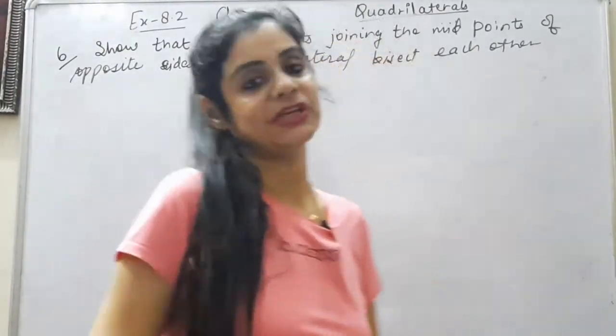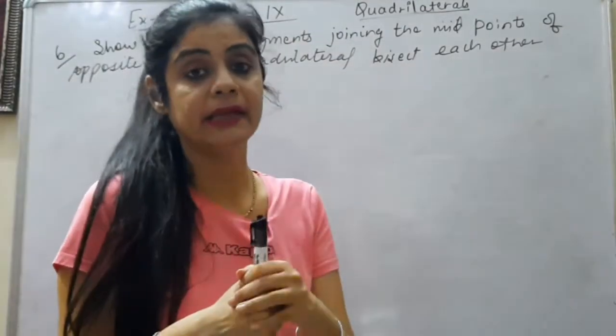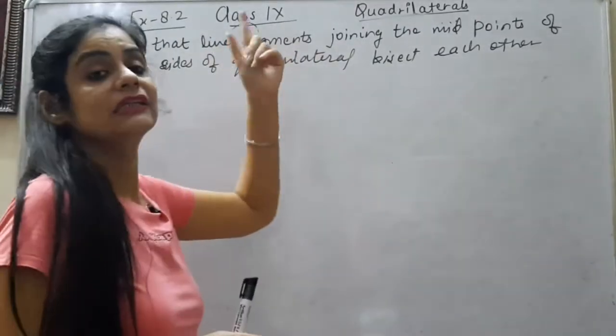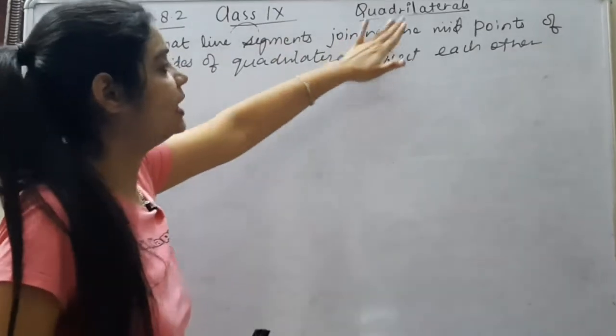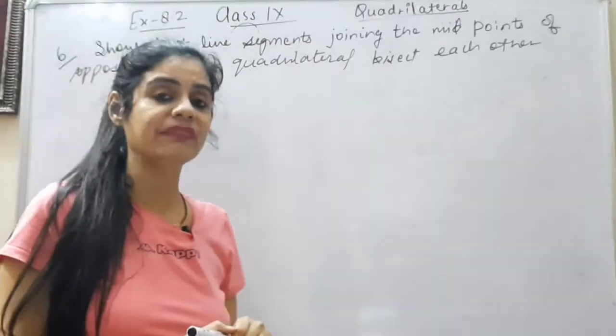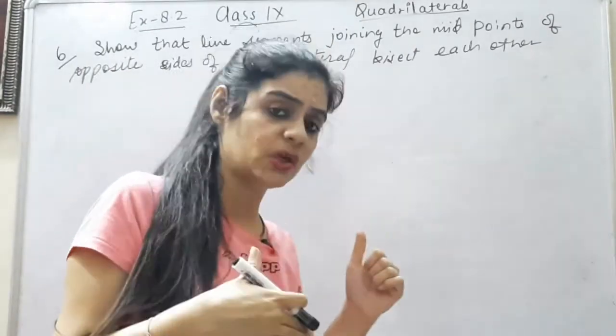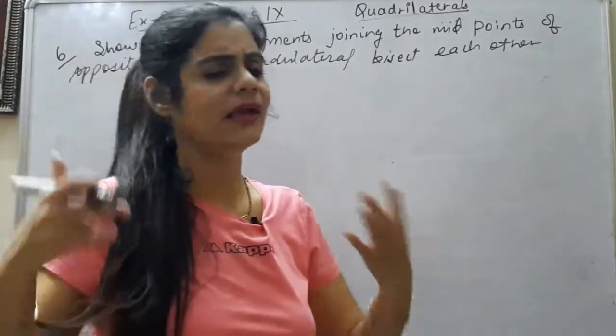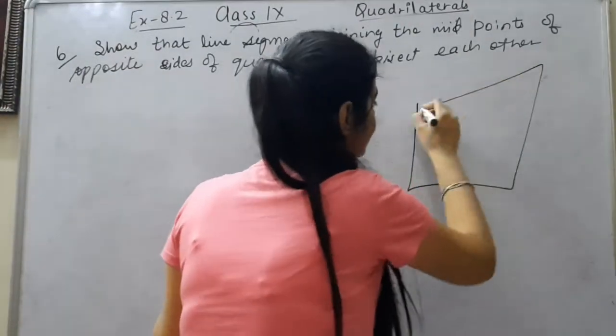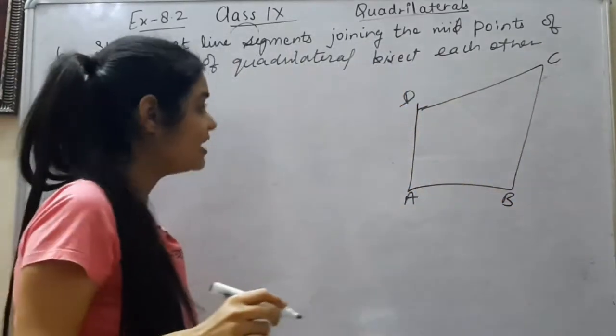We are starting question number 6 which is show that, first you don't have a figure. If you don't have a figure, then we will make it ourselves. The statement says show that the line segments joining the midpoints of the opposite sides of a quadrilateral. Quadrilateral means there is a four sided figure with no property to use. It's not a parallelogram because it is a quadrilateral given. I have made this quadrilateral, a four sided figure.